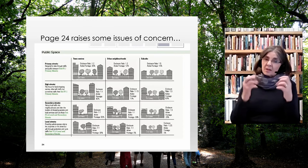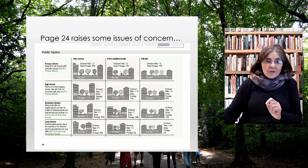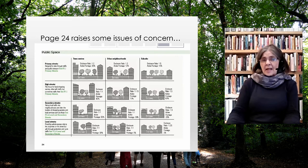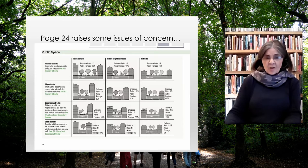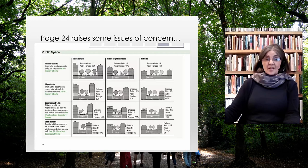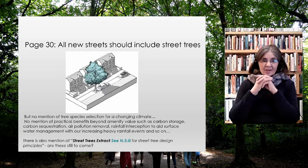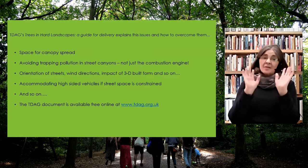Page 24 raises some concerns: little diagrams can demonstrate problems without flagging them. On secondary streets you start to see what we call street canyons, and one street shows canopies meeting with a car underneath. People who know about air quality will recognise huge concern about vehicle emissions being trapped. So although page 30 says all new streets should include trees, the diagrams reveal issues that need addressing.